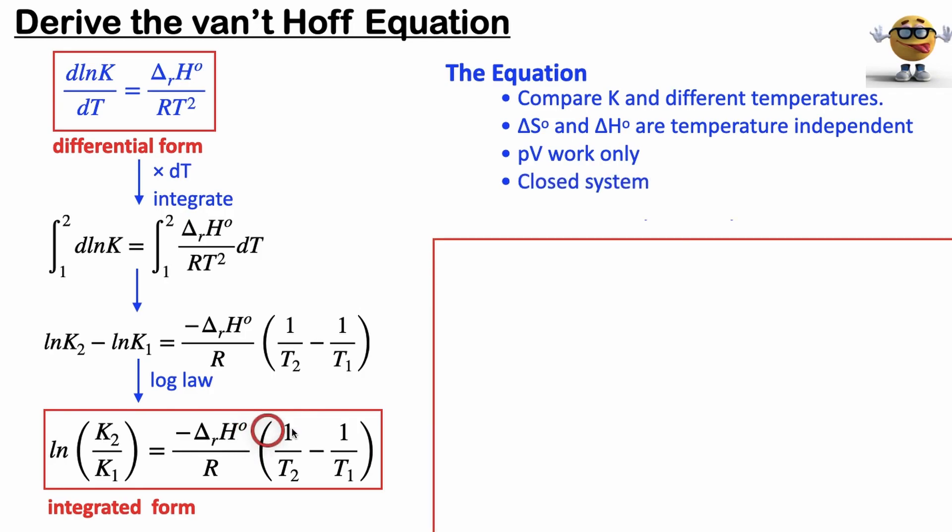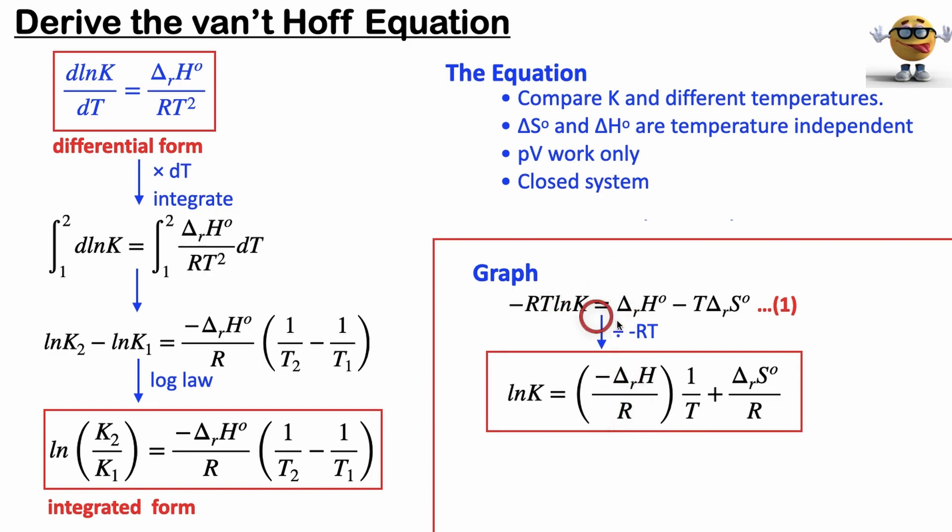Cool. Now for the graph, we're going to go back to that equation that I labeled as 1 from before. And we're going to divide both sides by negative RT to get ln K on the left-hand side. And then we just divide it by negative RT to get this on the right-hand side. And if we compare this to a straight line, like y equals mx plus b, ln K becomes our y. This is our slope. And 1 over T is our x. And this is our y-intercept. A graph of ln K versus 1 over T is a straight line if it obeys the Van't Hoff equation.